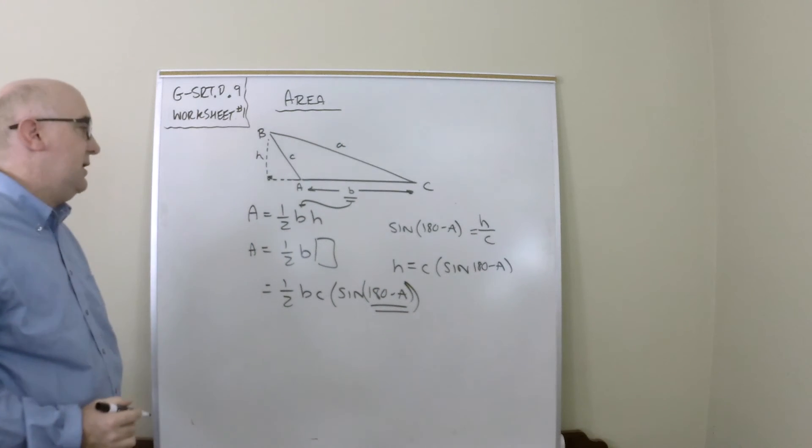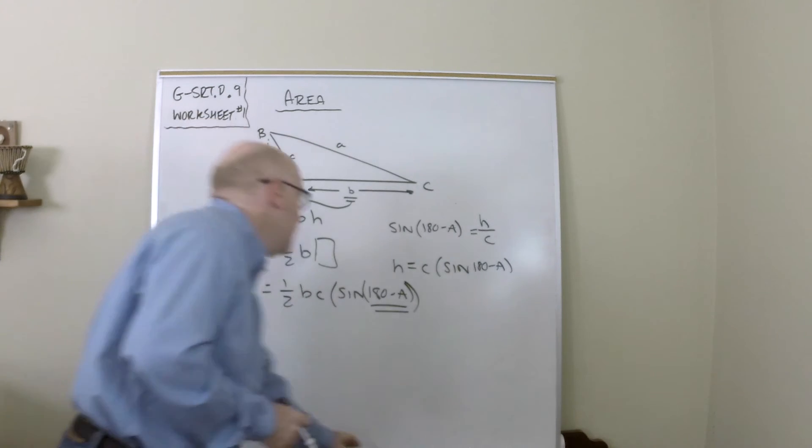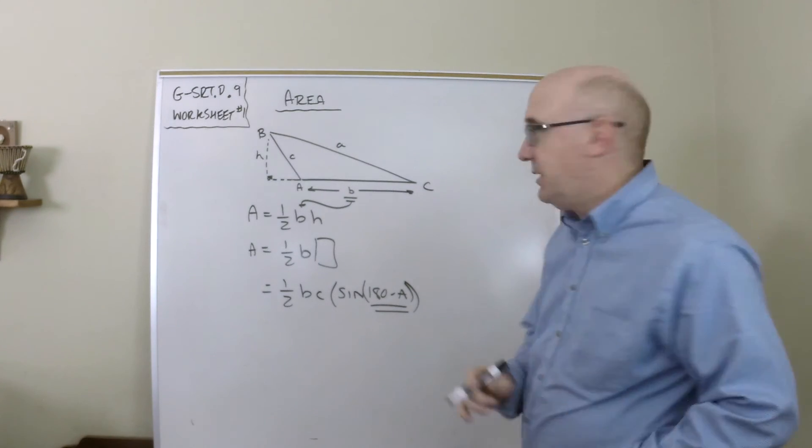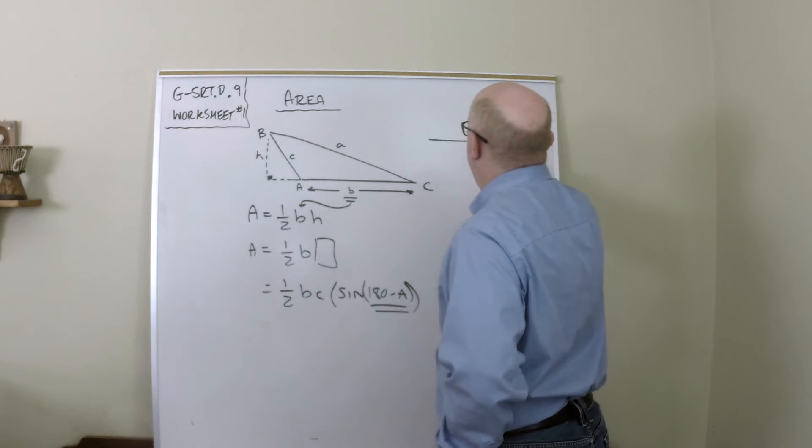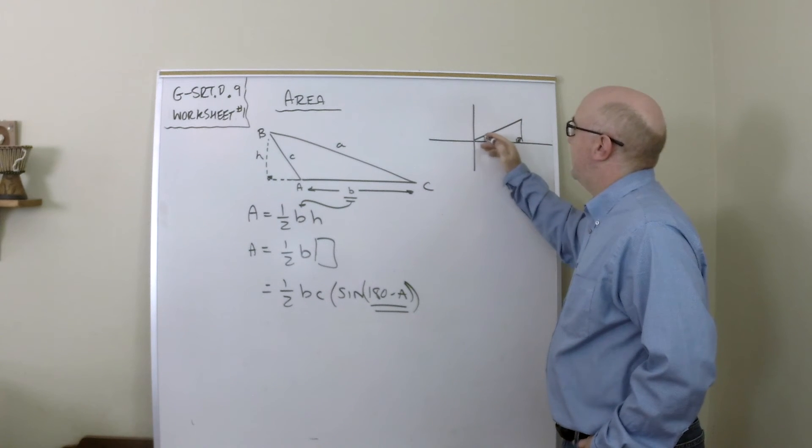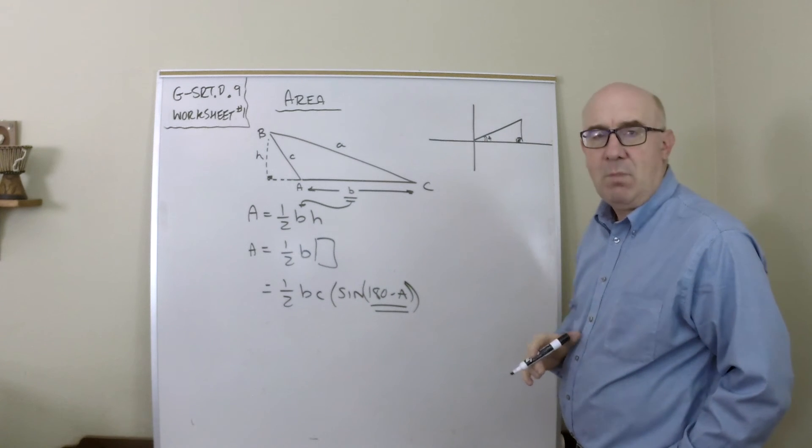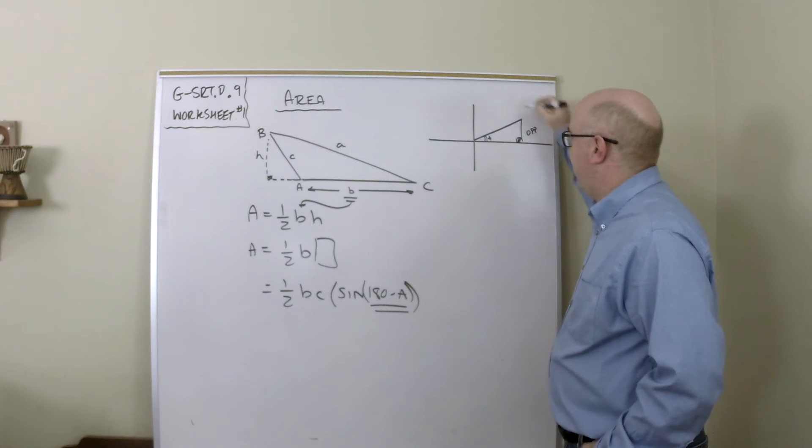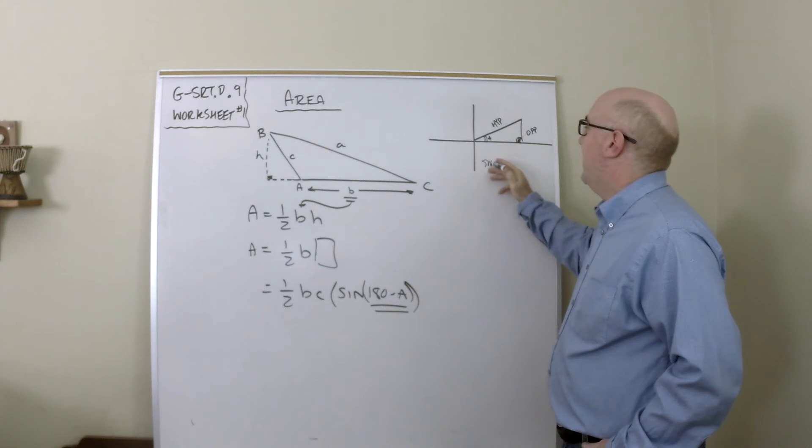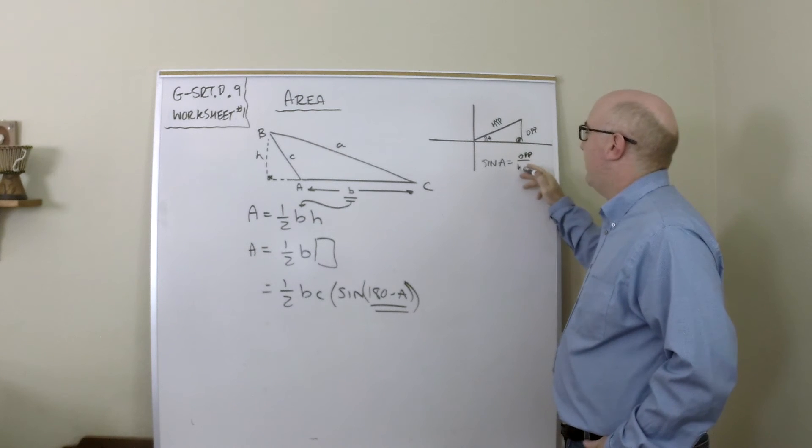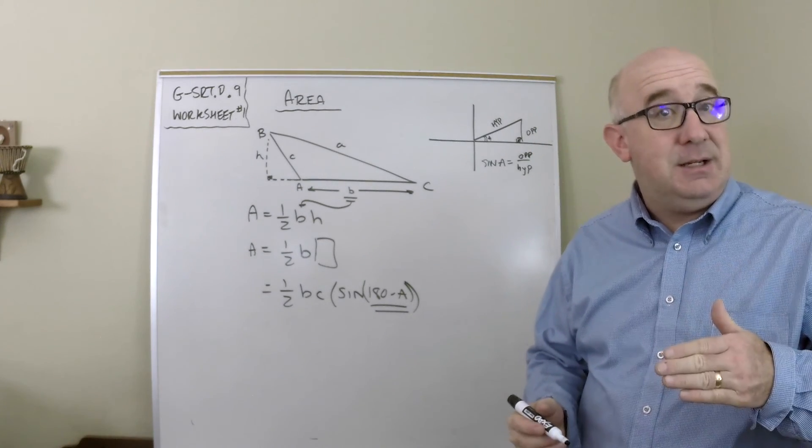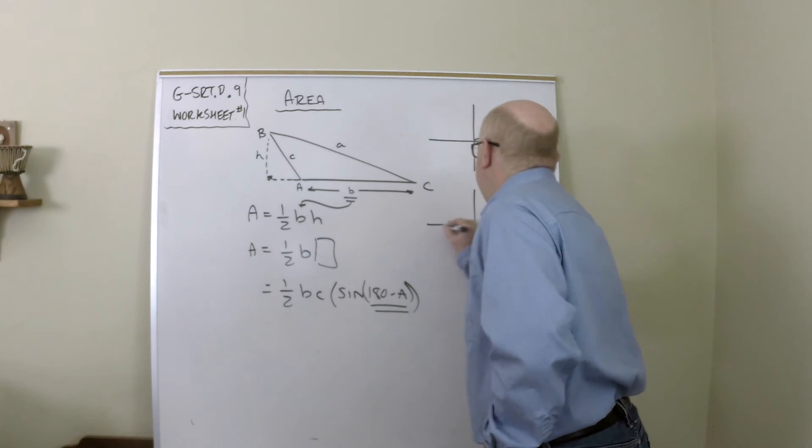180 minus A has a unique relationship, a little shortcut. And this is a little abstract for the first time, so keep an eye on this and we'll see if we can simplify it. If I had an angle, let's say this is my angle A here, it would calculate the opposite over the hypotenuse. Of course, sine of angle A, the sine of angle A is that opposite over that hypotenuse. Now, how big is the sine of 180 minus A?